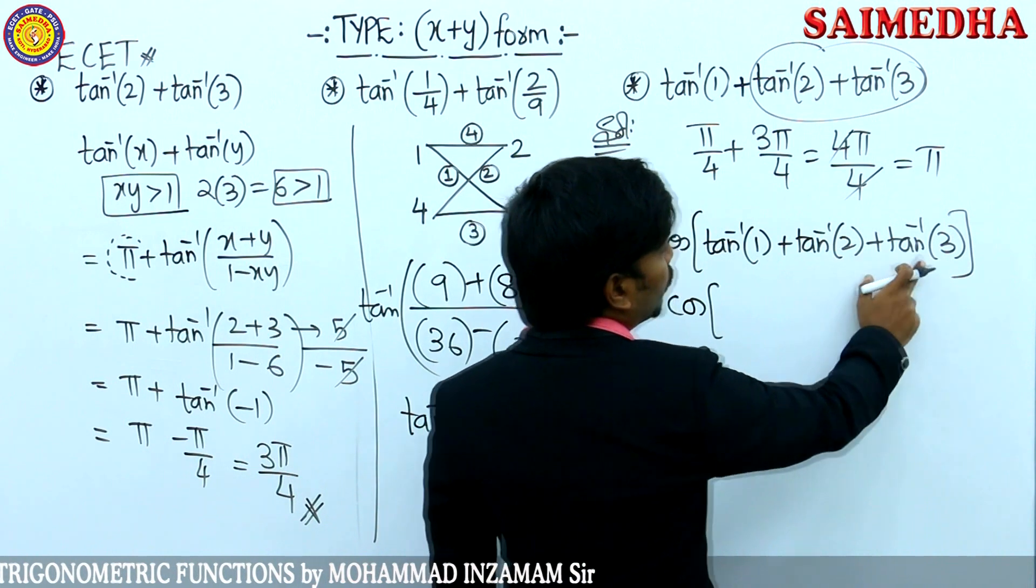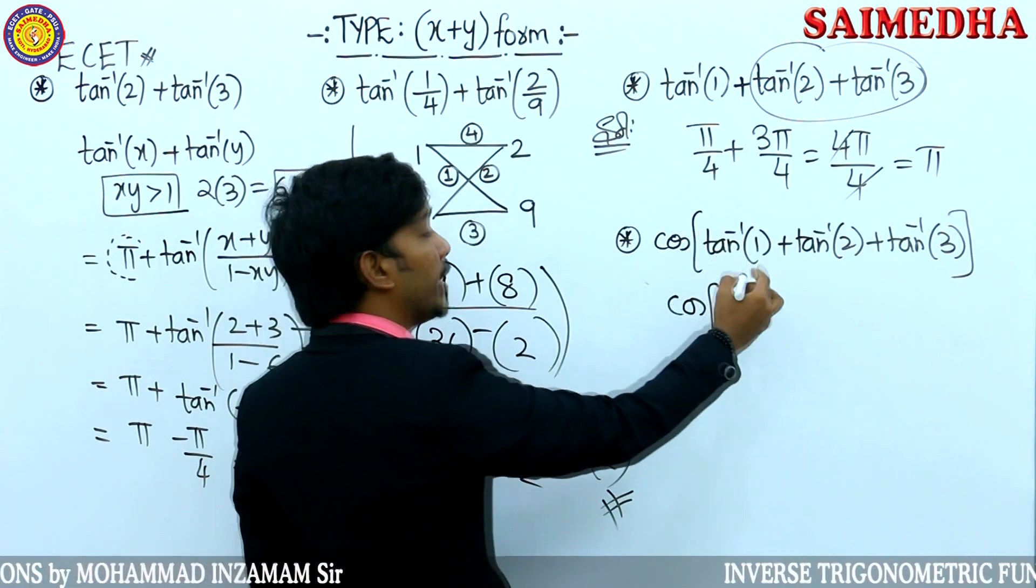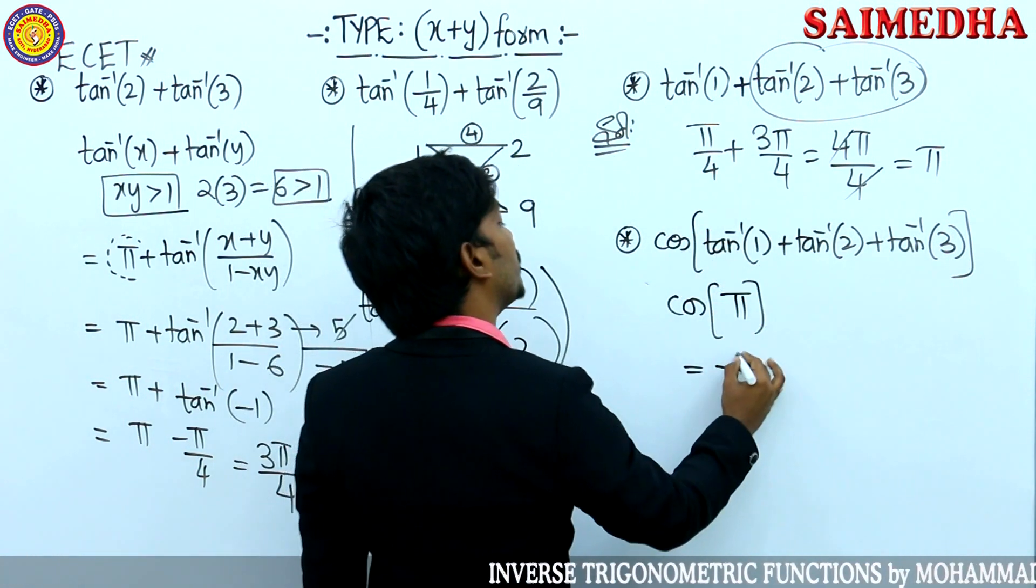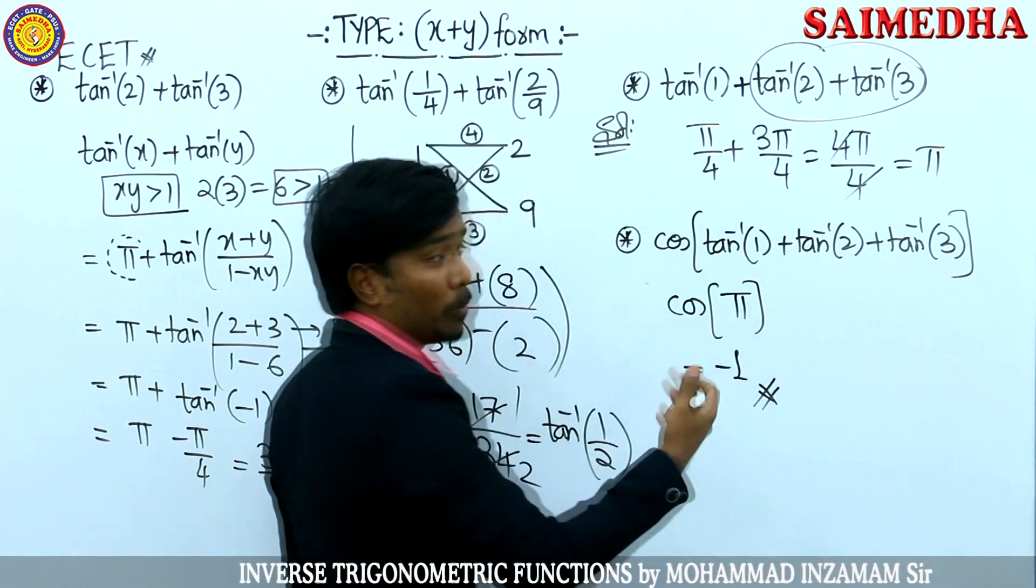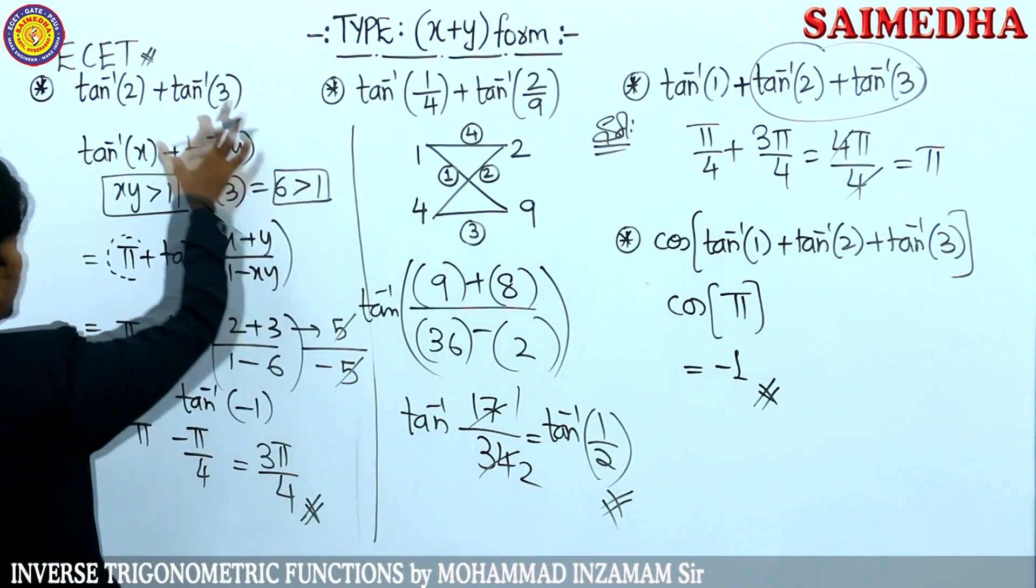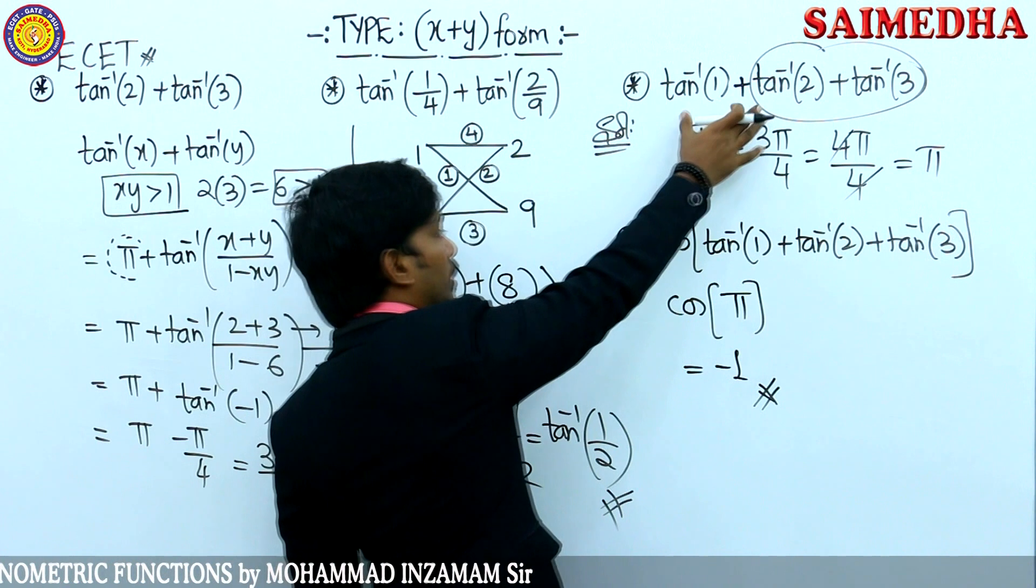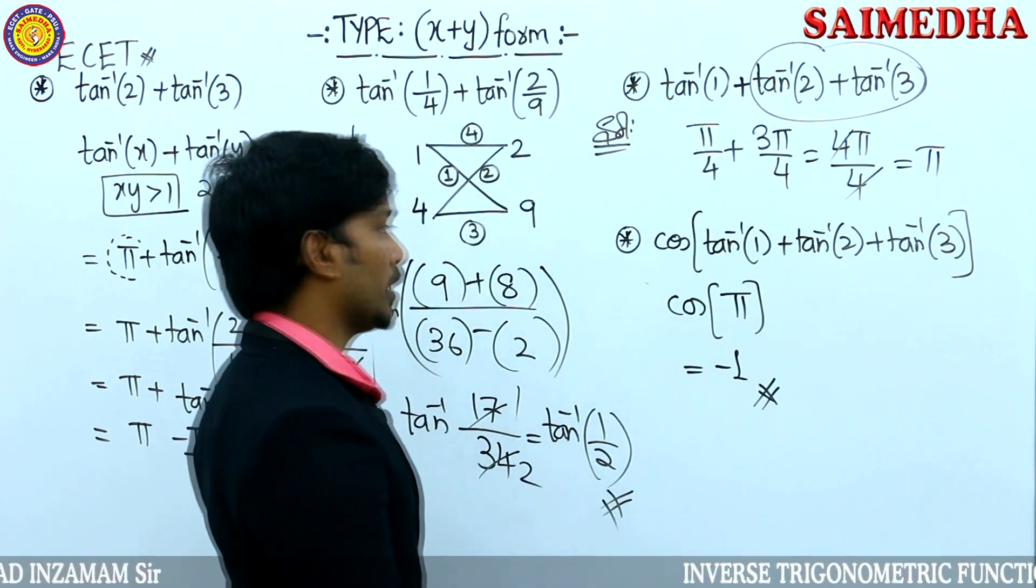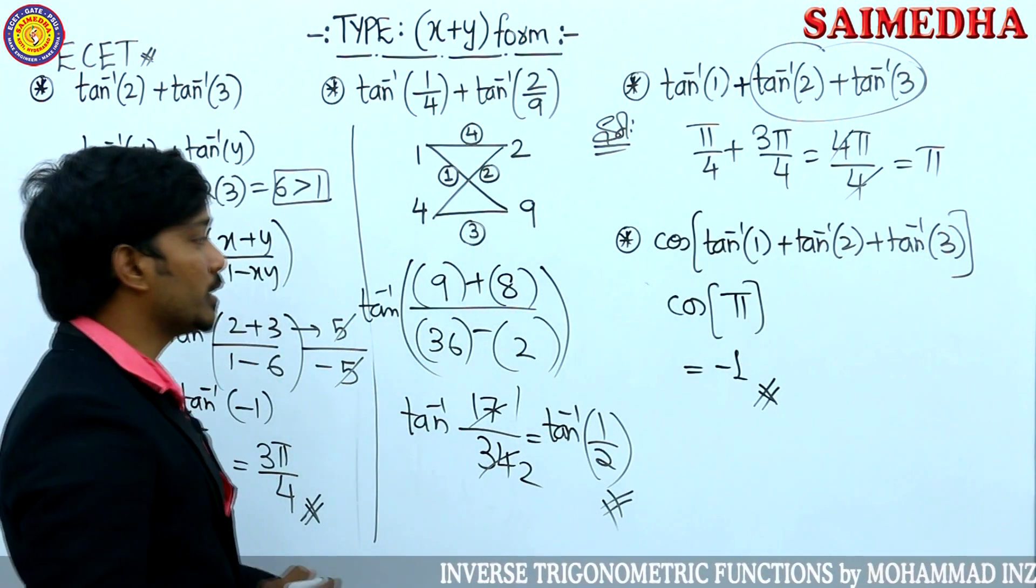So next, I'll modify the question. Cos of tan inverse of 1 plus tan inverse of 2 plus tan inverse of 3. Answer is pi. Cos pi is minus 1. So I can modify the question this way. First level question, second level question, third level question. Okay? Pause the video and note it down guys.